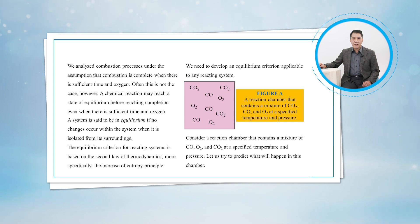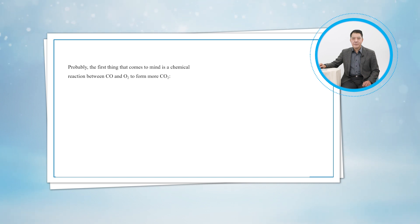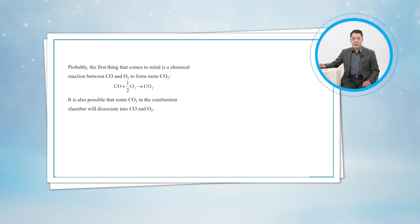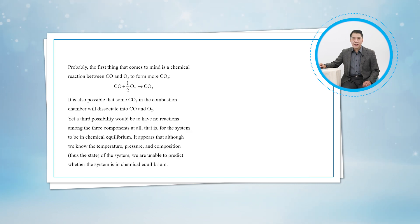Let's try to predict what will happen in this chamber. Probably the first thing that comes to mind is a chemical reaction between carbon monoxide and oxygen to form more carbon dioxide. This reaction is certainly a possibility, but it's not the only possibility. It's also possible that some carbon dioxide in the combustion chamber will dissociate into carbon monoxide and oxygen. Yet, a third possibility would be to have no reactions among the three components at all.